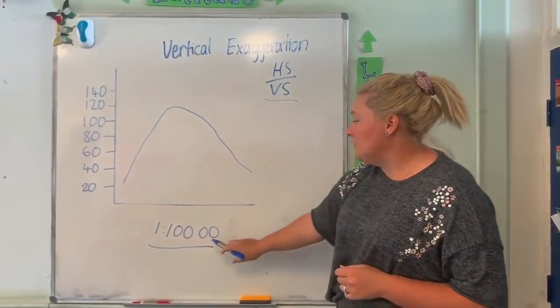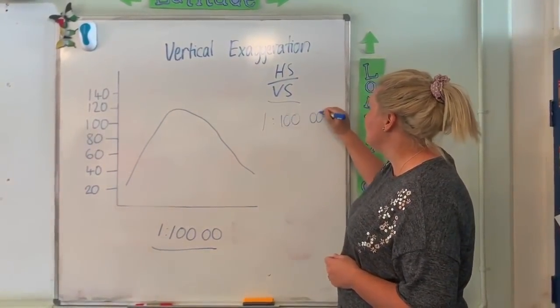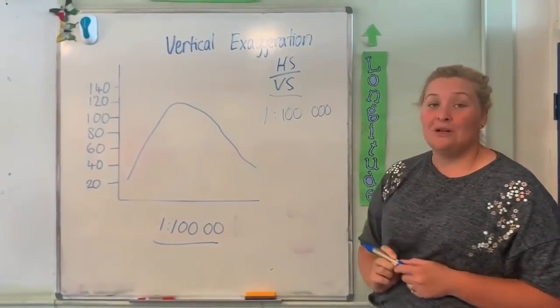First thing we're going to do is look at our horizontal scale. We're going to put it up here that 1 is to 100,000. Same scale that Cizio talked about before, where we say 1 cm is equal to 1 km.